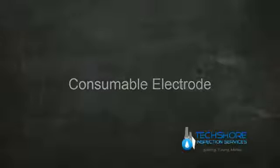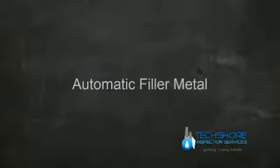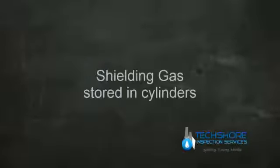So, in summary, MIG welding is an electric arc welding process. It uses a consumable wire electrode. Filler metal is added automatically. And the shielding gas comes from a high-pressure cylinder.